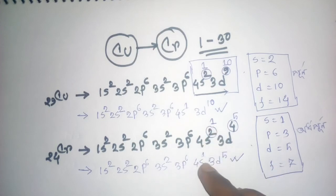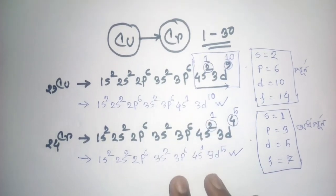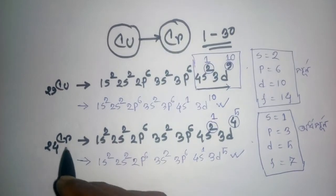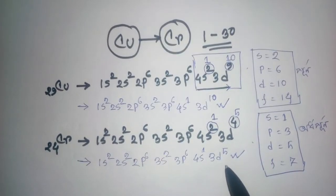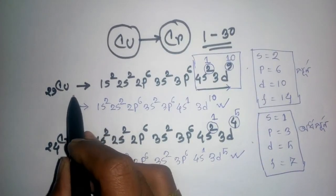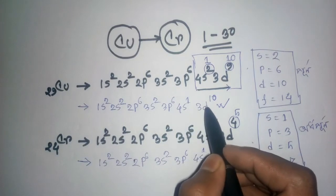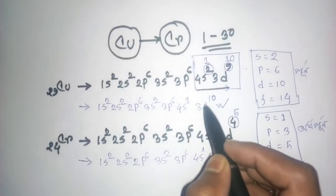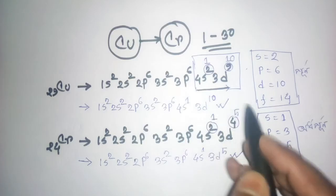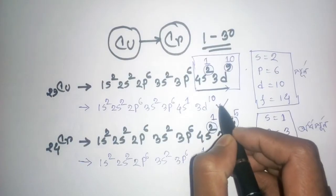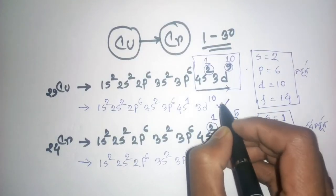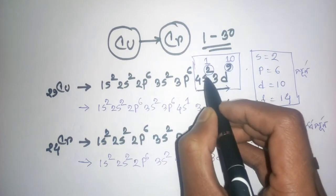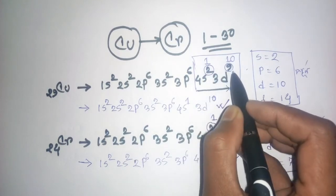When the orbital is half-filled, it is more stable. This is why copper and chromium have these specific electron configurations. The half-filled or completely filled d orbitals provide extra stability.